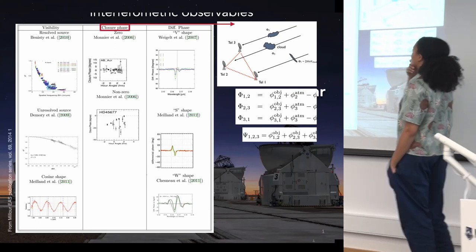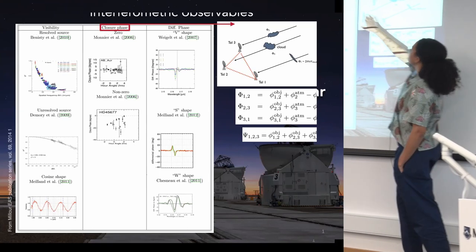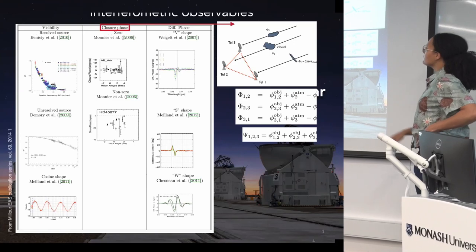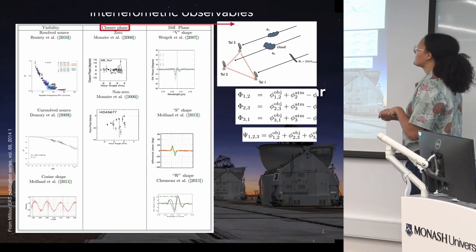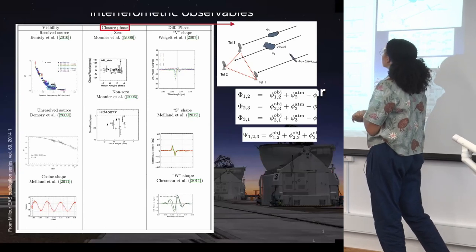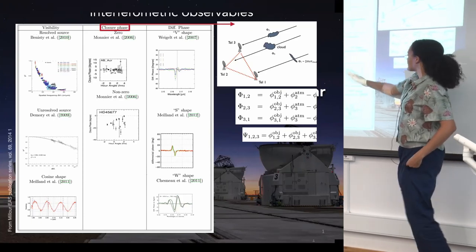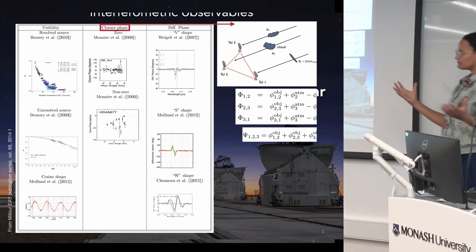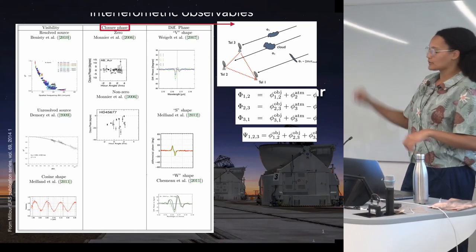Another phase we can retrieve is the differential phase. Instead of using a spatial baseline, we use the fact that we have a wavelength band we're observing with spectro-interferometers, and we use different wavelength points as references to obtain phase information. Different shapes tell you different things: a V-shape tells you about an asymmetry, an S-shape tells you about rotation, and a W-shape can tell you about expansion of shells. These are the three key observables that will appear throughout the results I'll show you.